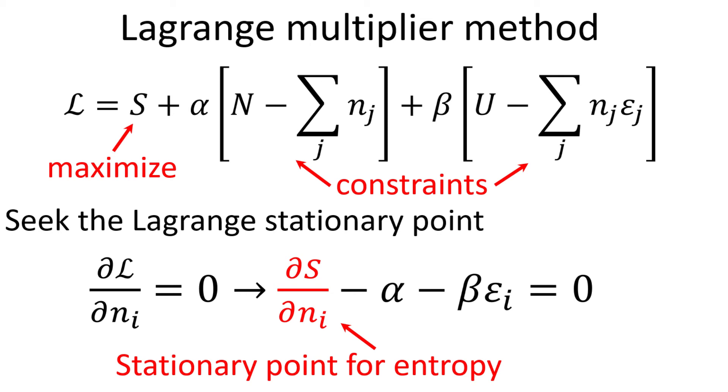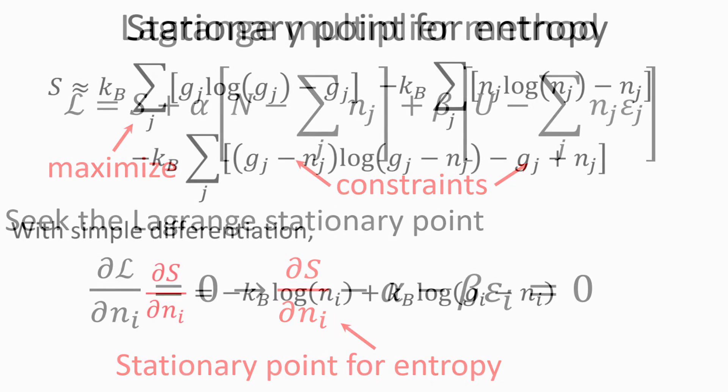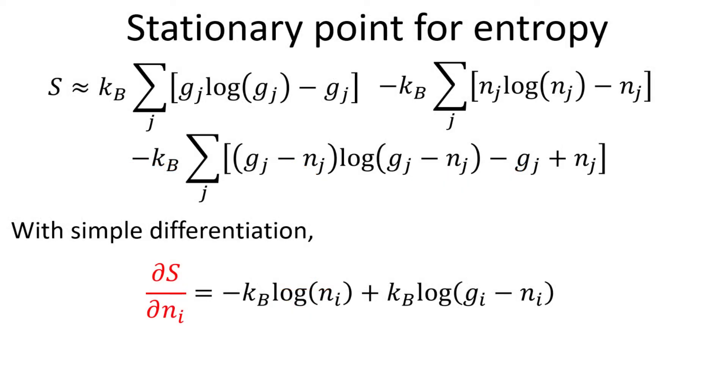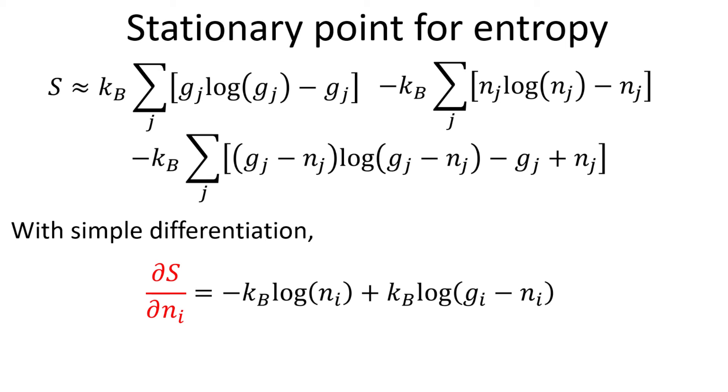We seek to find the Lagrange stationary point with respect to the number of particles at each energy level i. To proceed, we first have to find the stationary point for the entropy S. Recall the entropy expression we derived earlier with Stirling approximation. We can work out the stationary point for the entropy by taking differentiation with respect to N sub i.